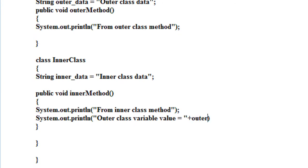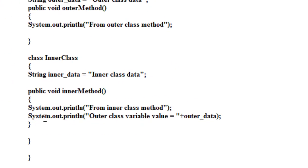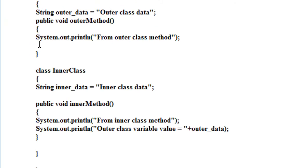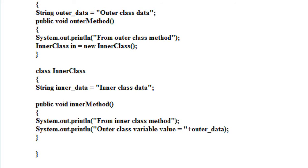I'm going to print the value of the variable outerData, which is actually a variable of the outer class. Now within this outerMethod I'm going to create an object of the inner class: InnerClass IN = new InnerClass(). By using that object I call the method called innerMethod.